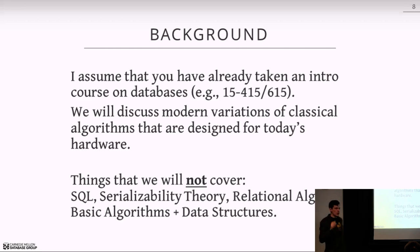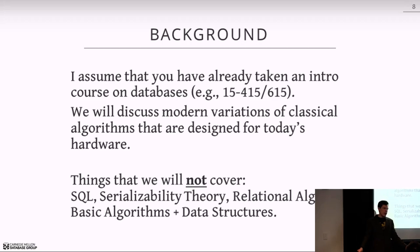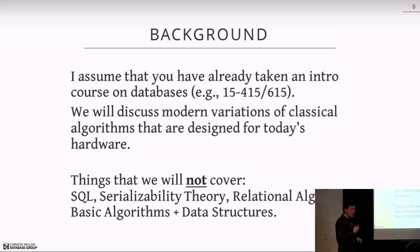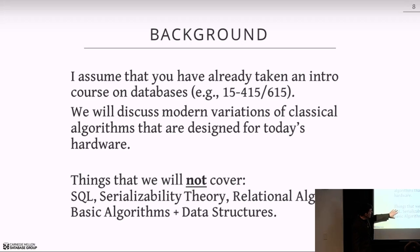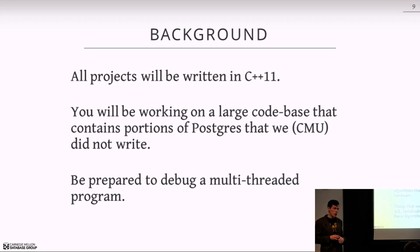I'm making a huge assumption that all of you have the appropriate database background — either 15-415 or 15-615 here at CMU, or some other intro database course. I'm going to talk about classical algorithms you learned in that intro course but then the modern variants. I won't explain what a hash join or sort-merge join is from scratch; I'll say, here's how you do it when you have 20 cores or everything's in main memory. The things we're not going to cover are SQL, serializability theory, relational algebra, and basic algorithms and data structures. If you don't know these, come talk to me.